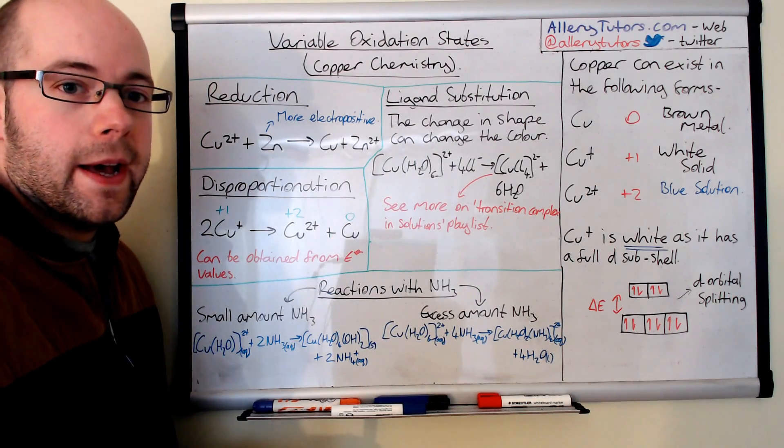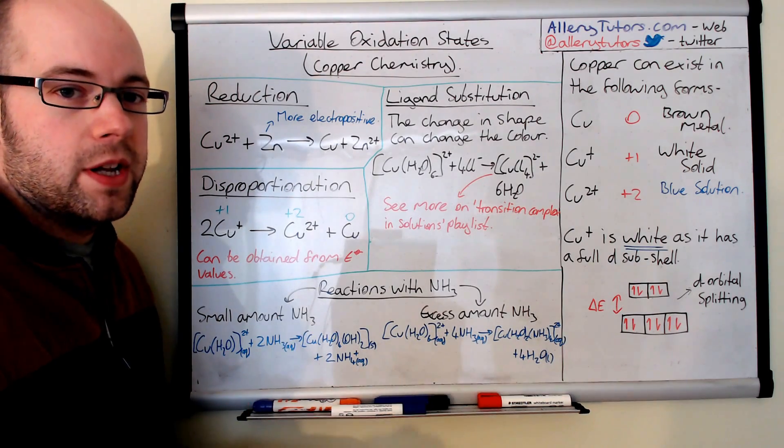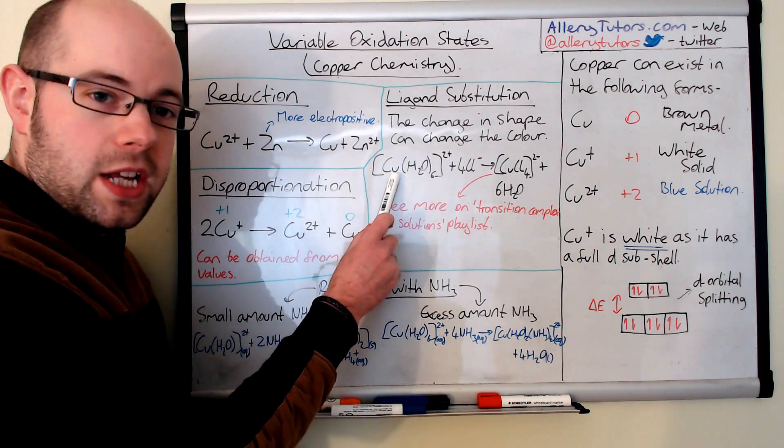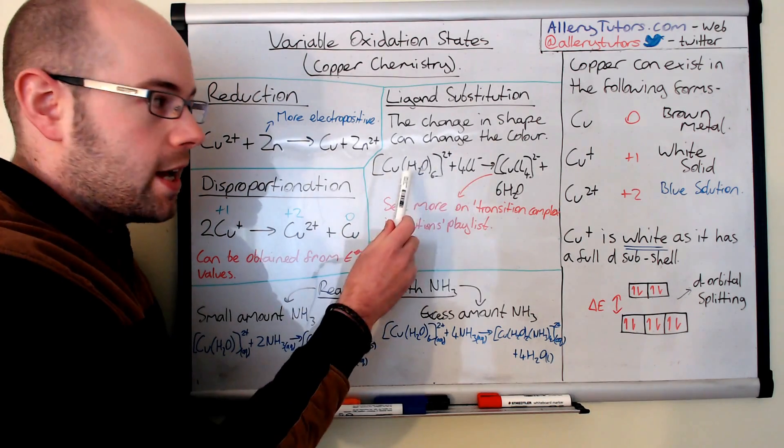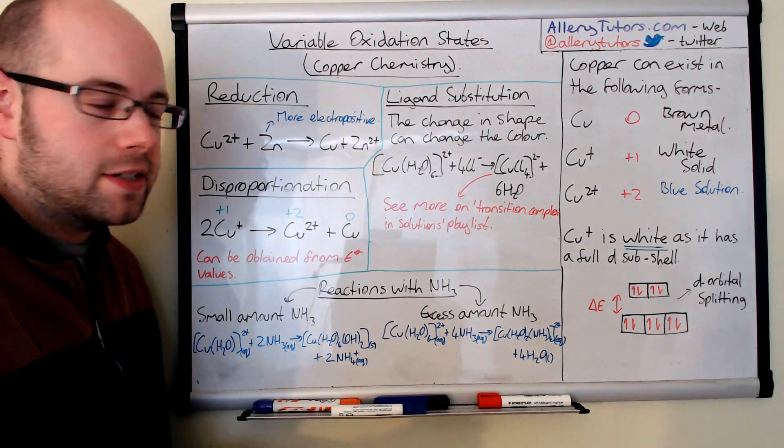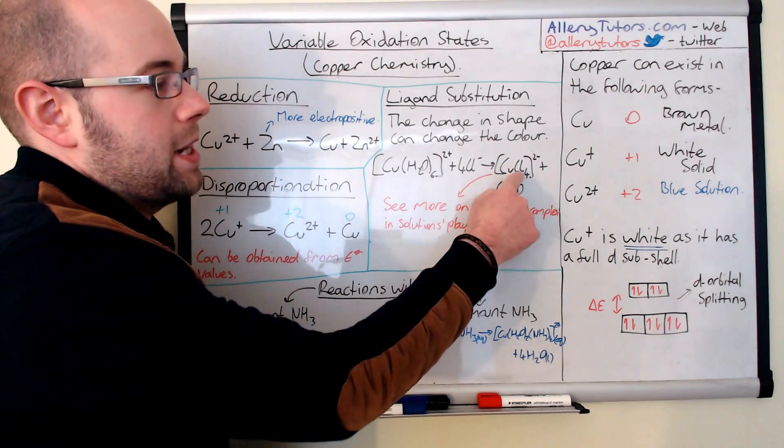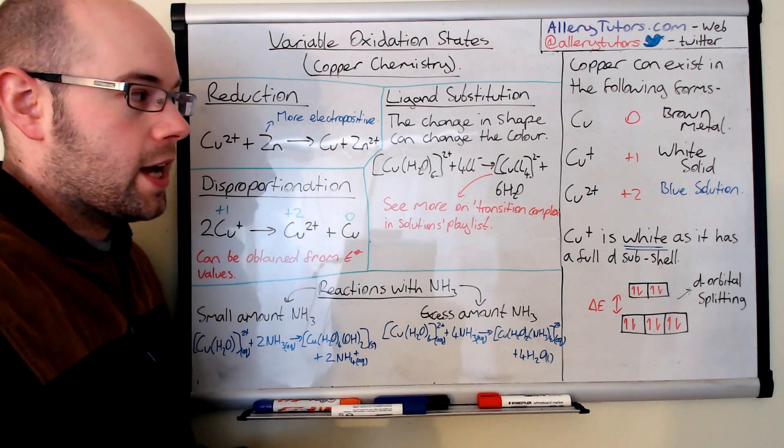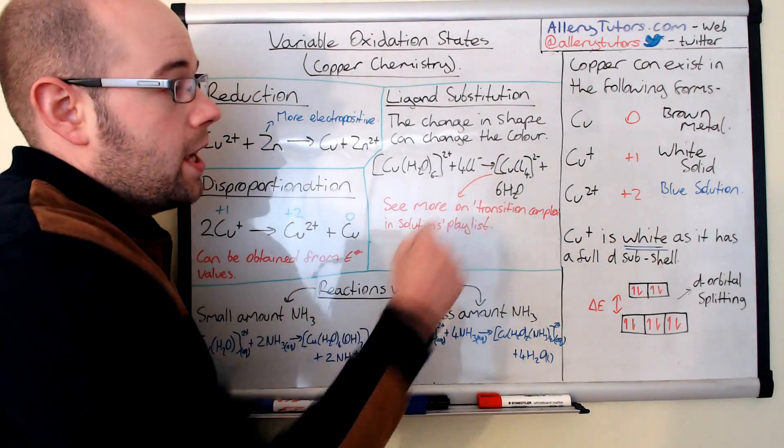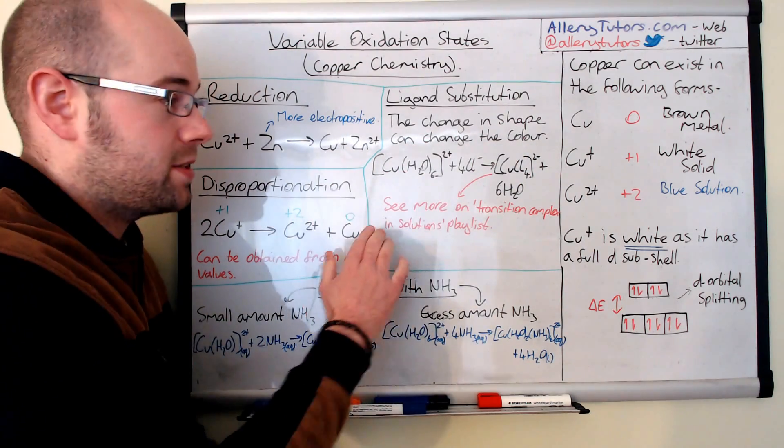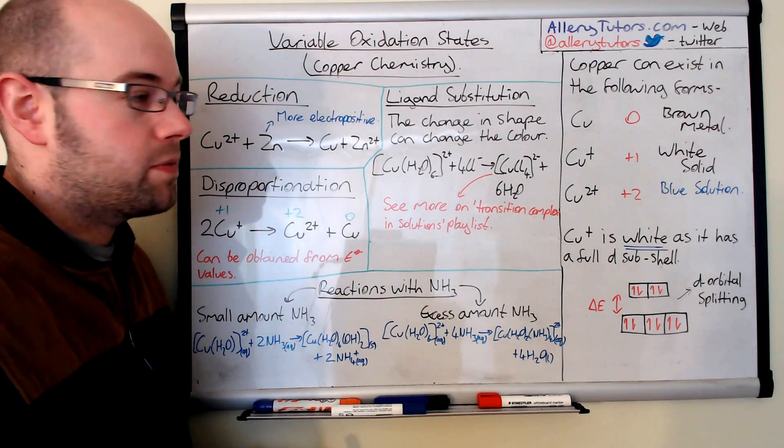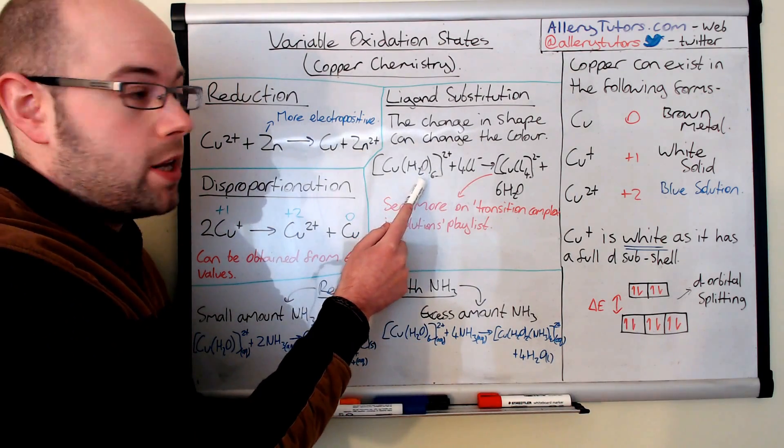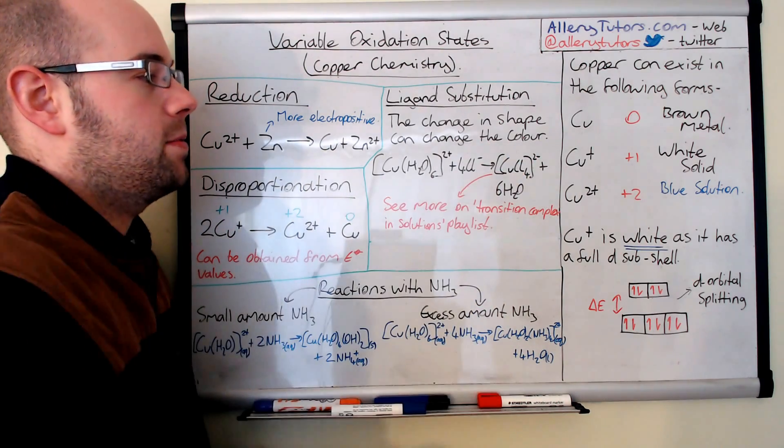Just come on to the ligand substitution part as well. Ligand substitution is where we can substitute one ligand for another one. But quite often with copper chemistry, we actually change the shape of the complex as well. And you can see here that we've got an octahedral copper hexaaqua two plus ion here. And if we react that with chloride ions, for example hydrochloric acids, then we will form a copper tetrachloride complex, which is this one here. This is a tetrahedral shape. So we've changed the shape of the complex as well as the ligand. And as a result, we get a color change here as well. And we form six waters as well. But again, if you want to know more about this, if you look on a playlist to do with transition complex and solutions, then you'll find more information about why this works and the actual shape of it as well. But this has gone from a blue color to a yellowy straw colored complex, which is your copper chloride.